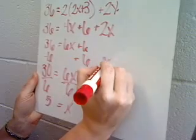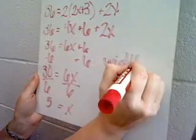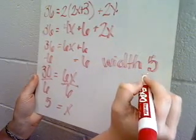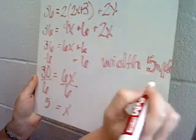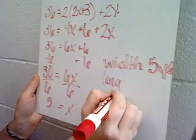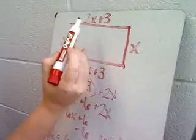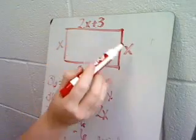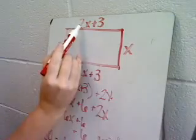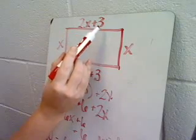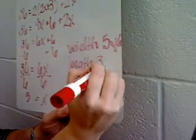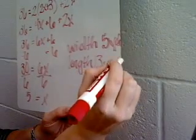So the width of the rectangle is 5 yards. And the length of the rectangle is going to be 2 times 5, which is the width, plus 3. 2 times 5 is 10, plus 3 is 13. So the length of this rectangle is 13 yards.